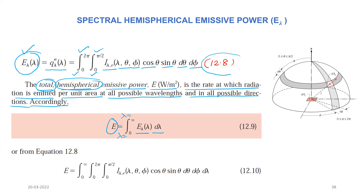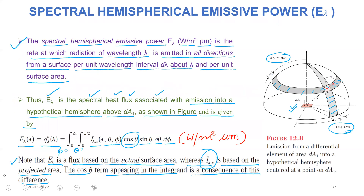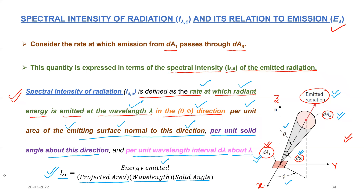In this lecture we discussed two things: first, the spectral intensity of radiation, and second, its relation to emission e_lambda. The emitted energy divided by projected area, wavelength, and solid angle gives the spectral intensity of radiation. Because we consider a particular direction, we can also call it the directional spectral intensity of radiation — or note that spectral intensity of radiation is already a function of theta and phi.